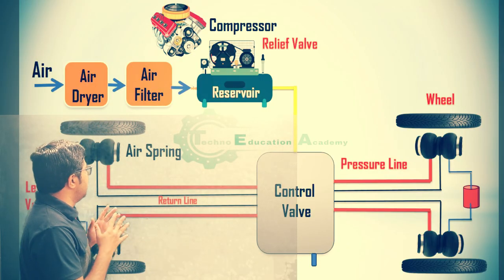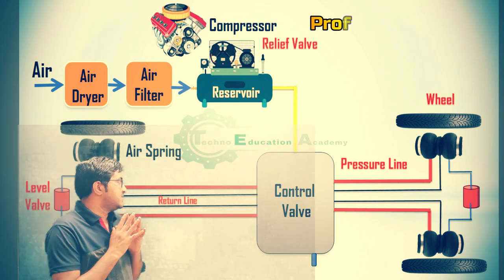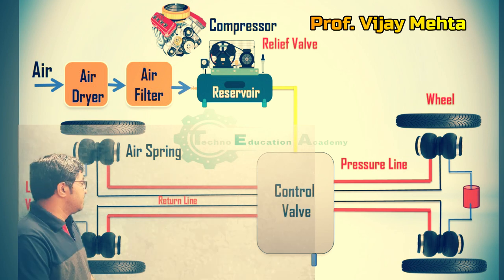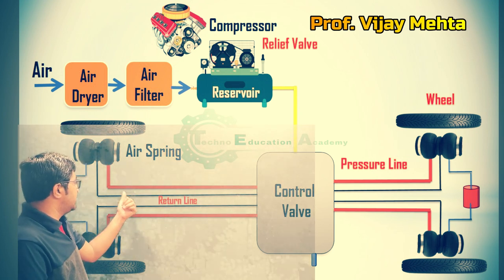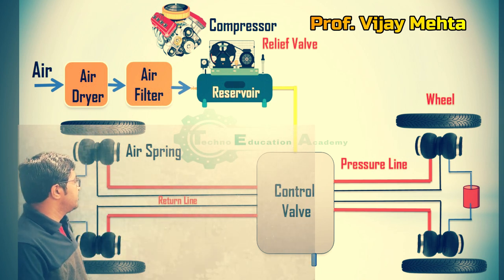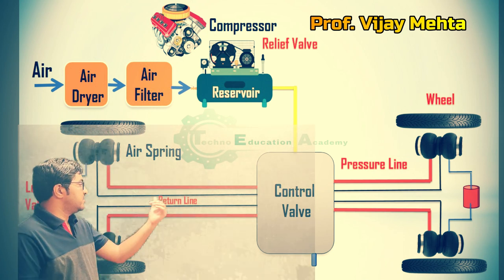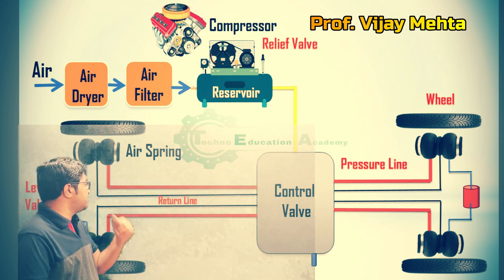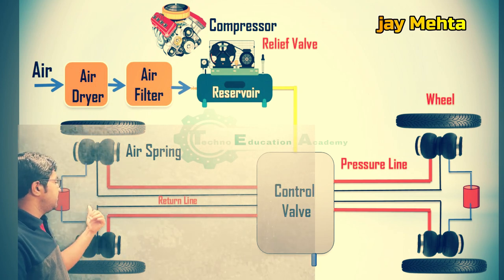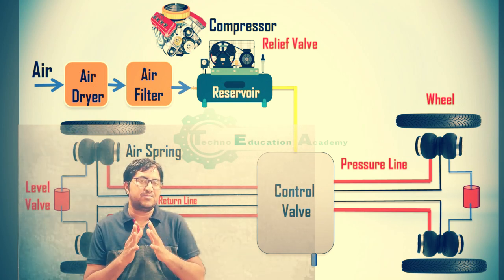Now we will discuss the working principle of the air suspension system. The air spring is connected with three lines. The first one is the pressure line, which is connected through the control valve to the air spring. The second one is the return line, connected through the control valve to the atmosphere. The third one is the control line, connected with the level valve. So three lines are connected with the air spring.